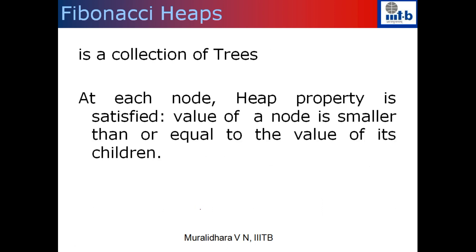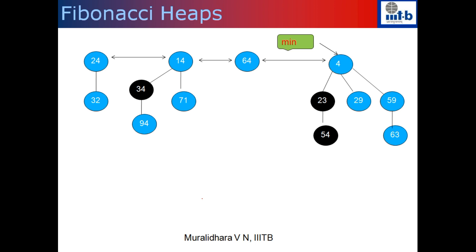Let us look at an example of a Fibonacci heap. This is a collection of trees — the number of trees is 4 here, and trees can be any general trees. All the roots are connected by a doubly circular list, which we call the root list. Whichever tree has the minimum element is pointed to by the minimum pointer that we keep track of. When I give you a Fibonacci heap, what I give you is a pointer to this minimum node, which is part of the root list. From every node you also know how many children there are, the list of all children, and the next and previous elements in the root list.